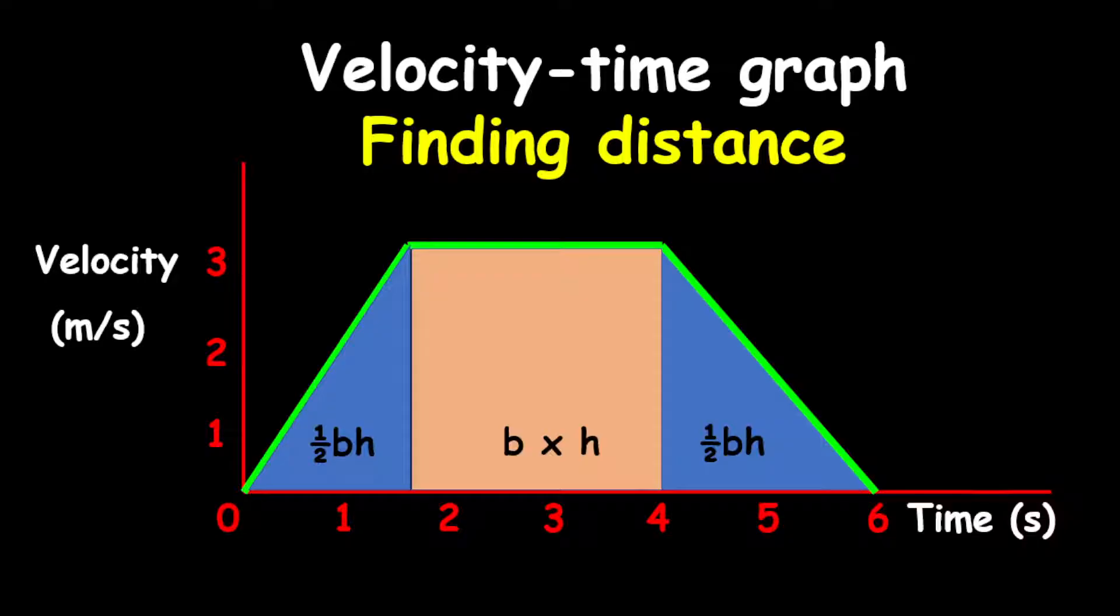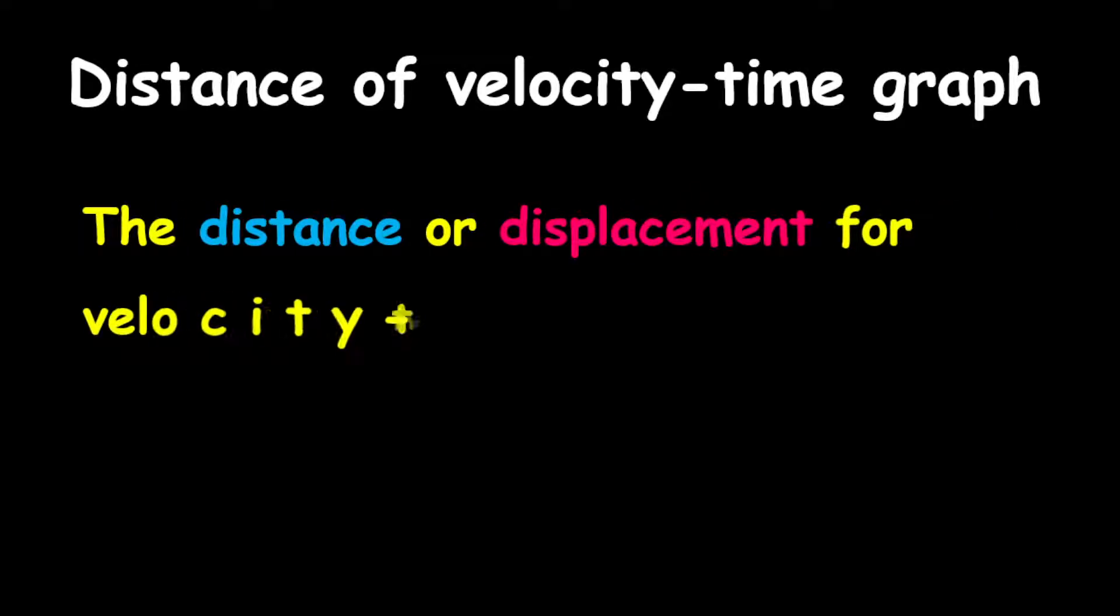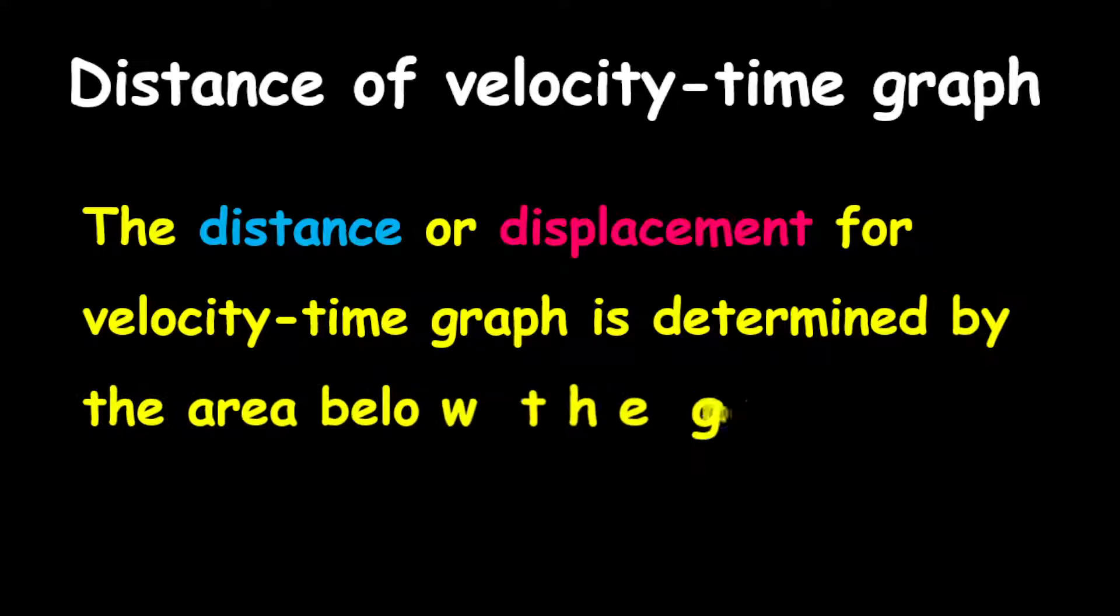Let's quickly jump in to give a brief overview of how we find distance of a velocity-time graph. The distance or displacement for a velocity-time graph is determined by the area below the graph. So pretty much the area below the graph is what you're finding when you're finding distance using a velocity-time graph.